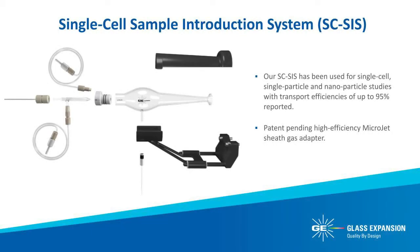Glass Expansion's single cell sample introduction system is made up of three key components: a high efficiency nebulizer, a low volume on-axis spray chamber, and our patent-pending microjet gas adapter. The combination of these proprietary Glass Expansion designs differentiates our system from other commercially available systems and provides the ability to achieve up to 95% transport efficiency in single cell, single particle, and nanoparticle studies.